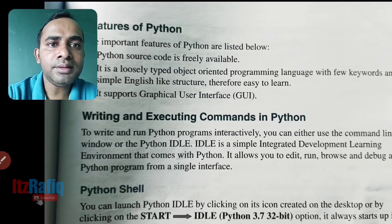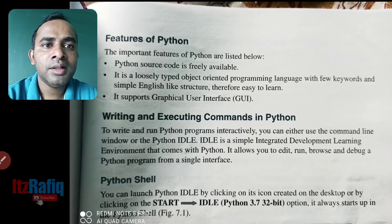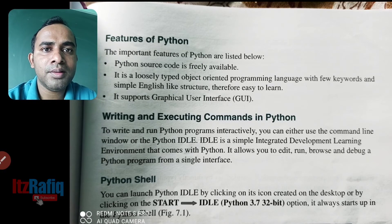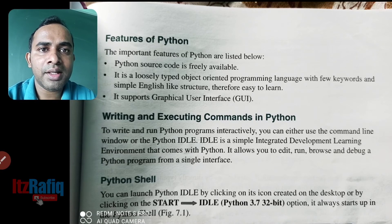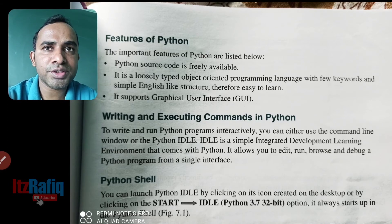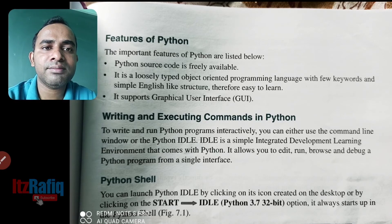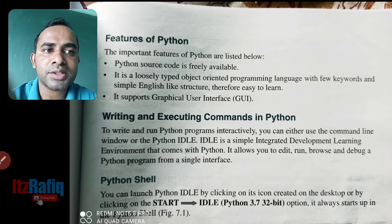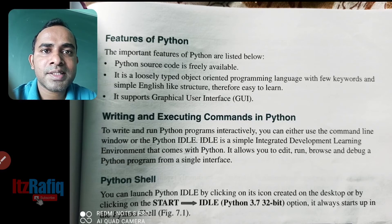Here are some important features of Python. First, Python source code is freely available on the internet — you can download it, and if you want any modifications or new features, you can write them yourself. Second, it is a loosely typed, object-oriented programming language with few keywords and a simple English-like structure, making it easy to learn.